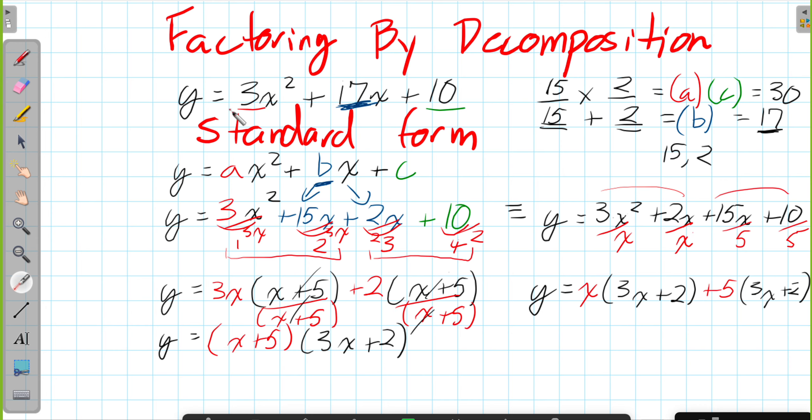Same idea, we common factor out the 3X plus 2 and 3X plus 2. And again, you don't have to show that common factoring step. You can kind of just jump to the last thing here.